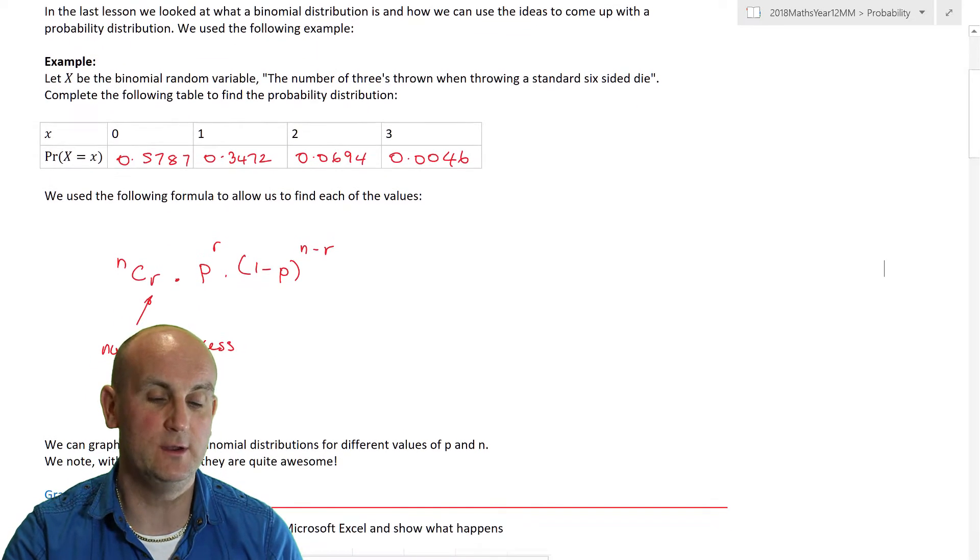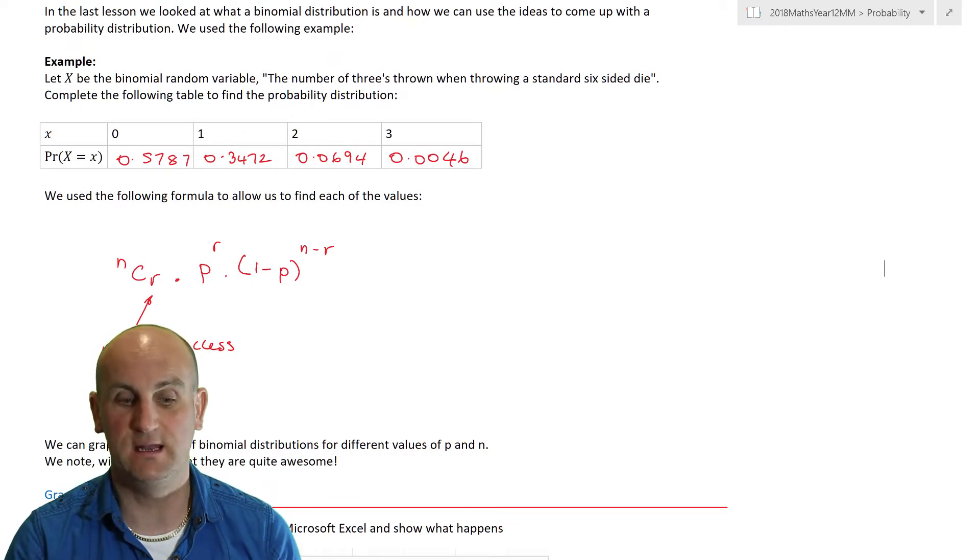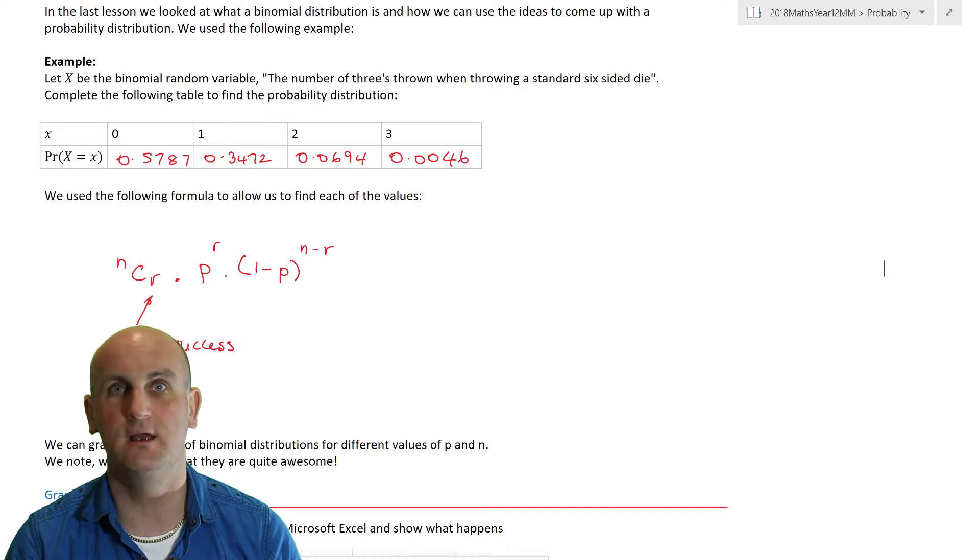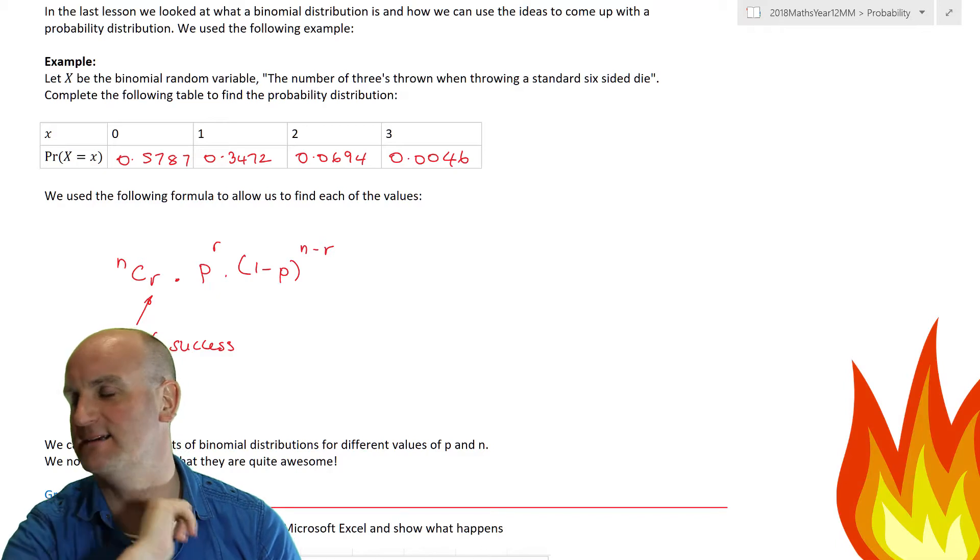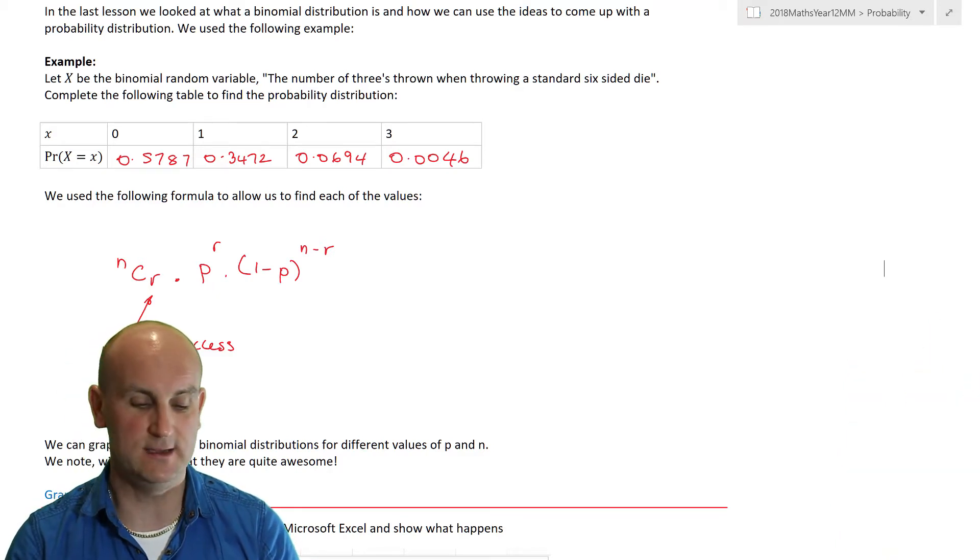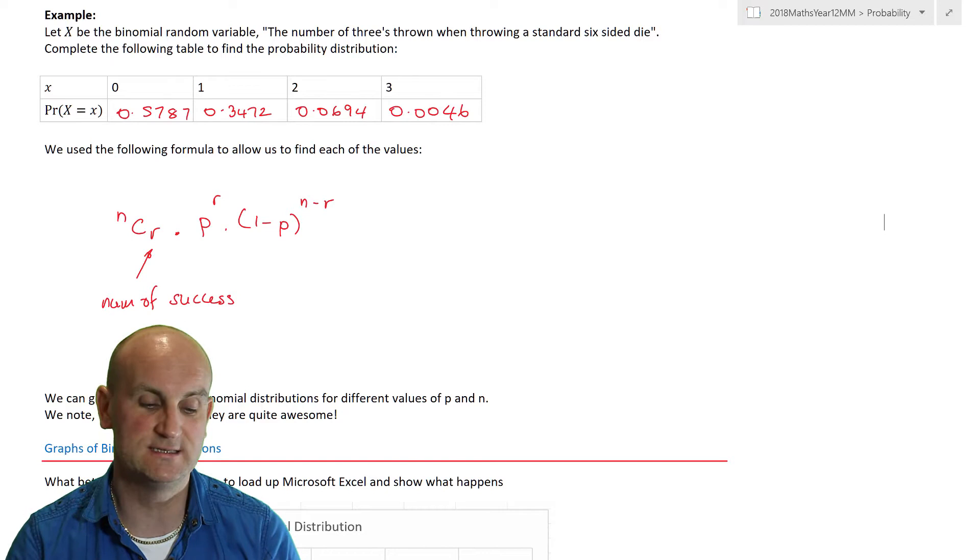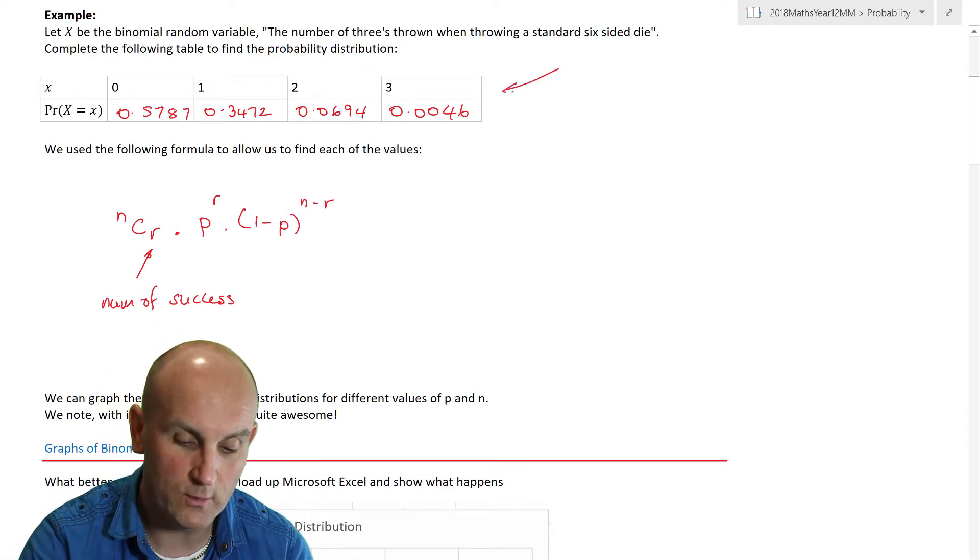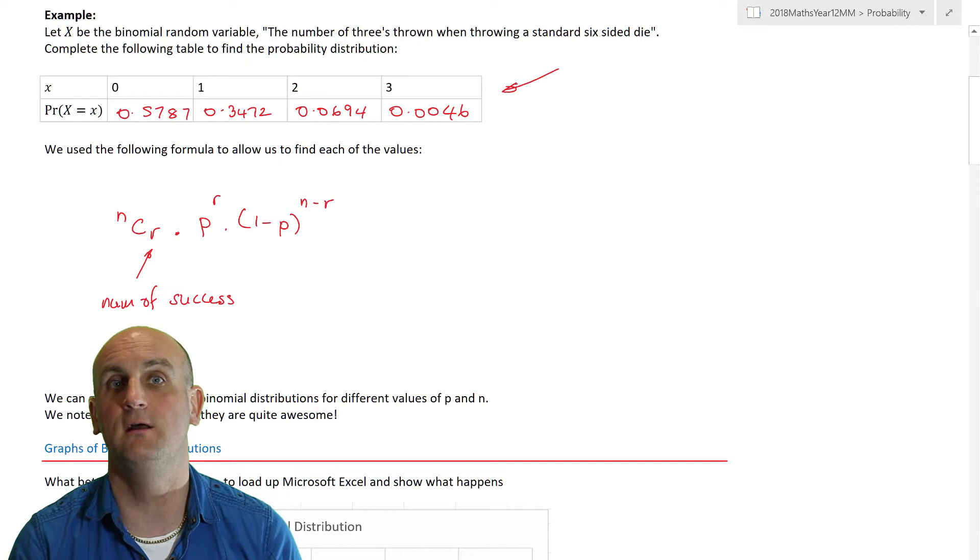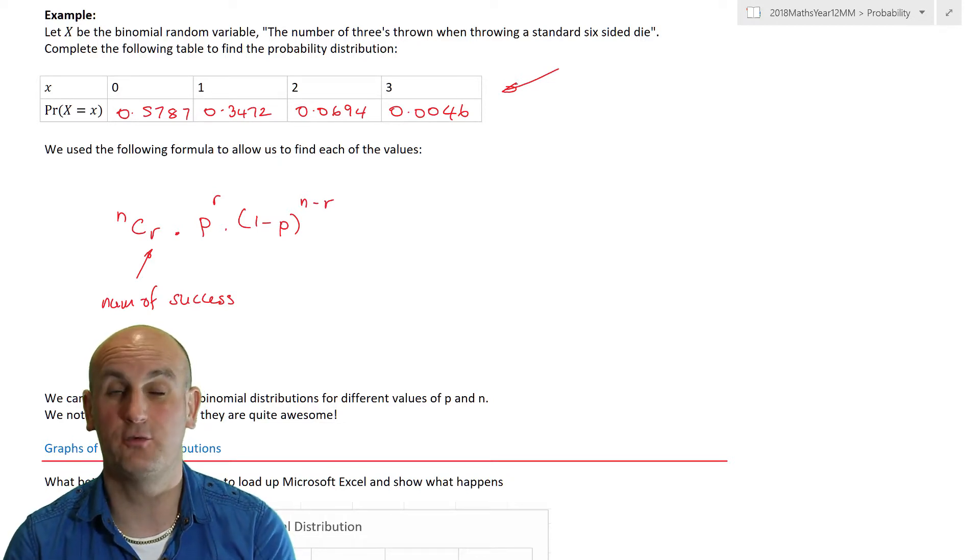In the last lesson we looked at the binomial distribution and the idea of successes and failures. We came up with formulas and ways using Pascal's triangle and expansion of brackets to help us get individual probabilities. Luckily we fired up our calculator and there was an easy way of doing this. The example we used was let X be a binomial random variable which says the number of threes thrown when throwing a standard six-sided die.